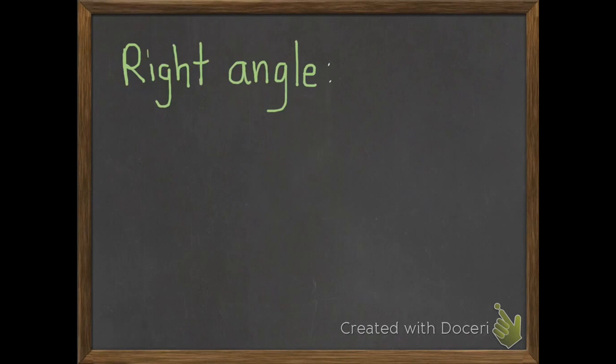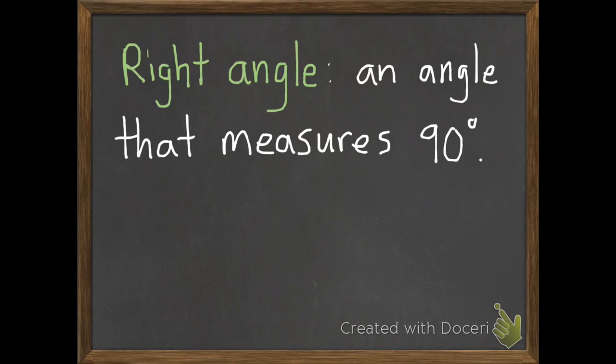The second vocabulary word we need to write down and know is what a right angle is. So a right angle is an angle that measures 90 degrees. Here's a picture of one. So basically it looks like our one-fourth turn.